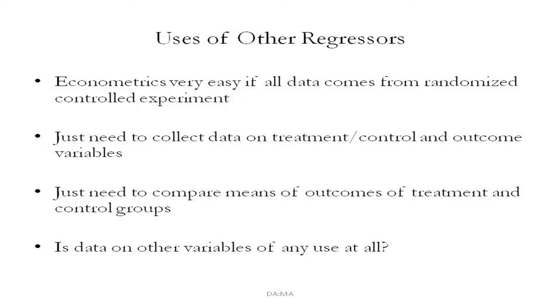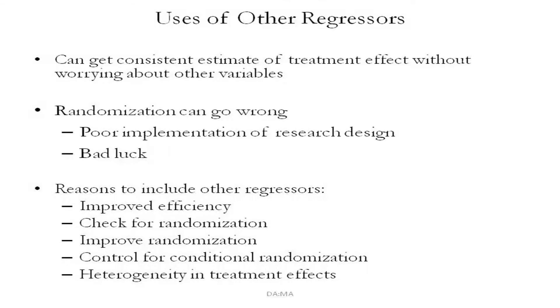Let us look at the use of other regressors and the importance of their use. Econometrics is very easy if all data comes from randomized controlled experiments, because all you need to do once you have a controlled experiment is to compare the outcomes — the y_i's — between the treatment and the control groups. But if you could establish that it was a perfectly run randomization, do we at all need data on other variables, or do we just need to collect data on treatment, control, and the outcome variables and simply compare the means?